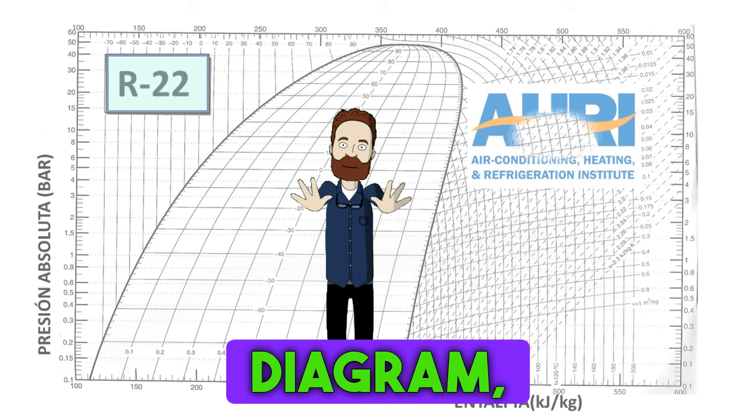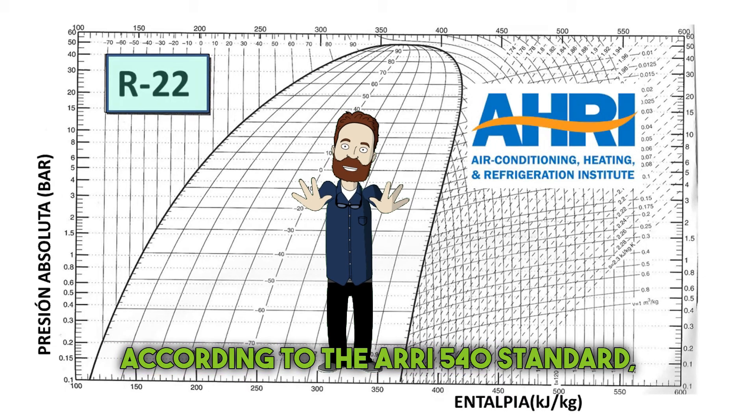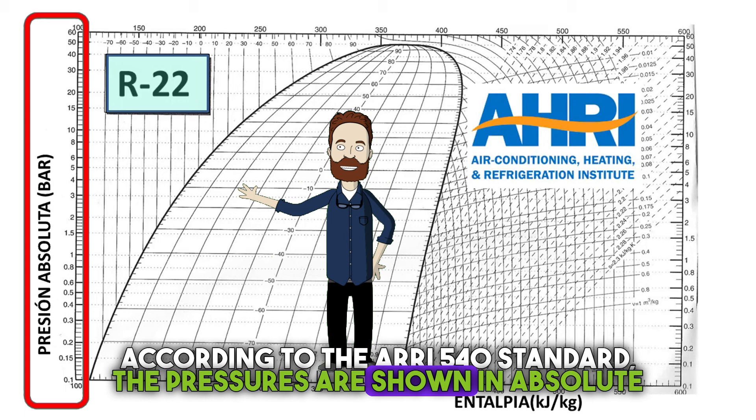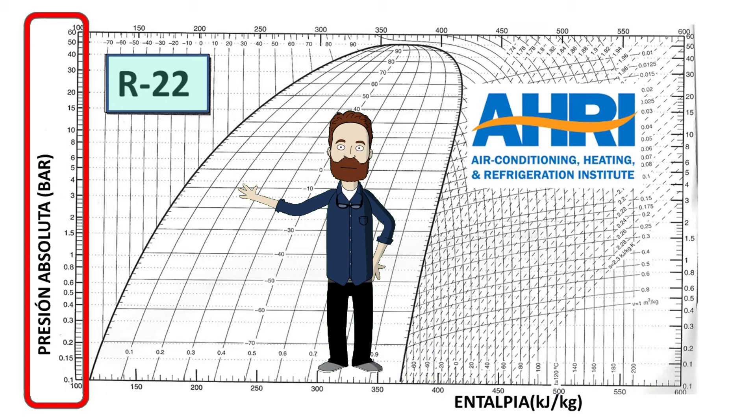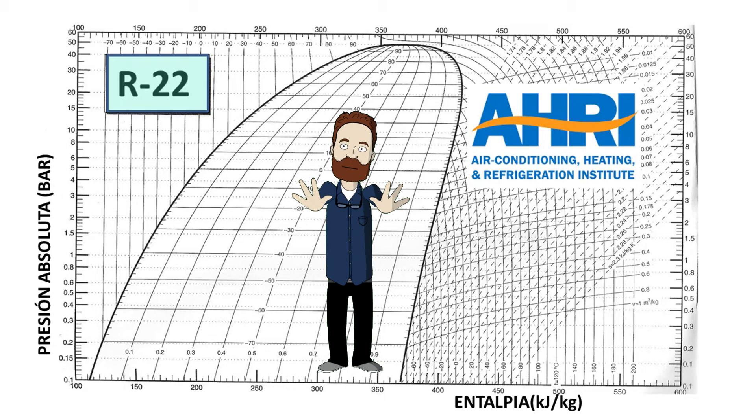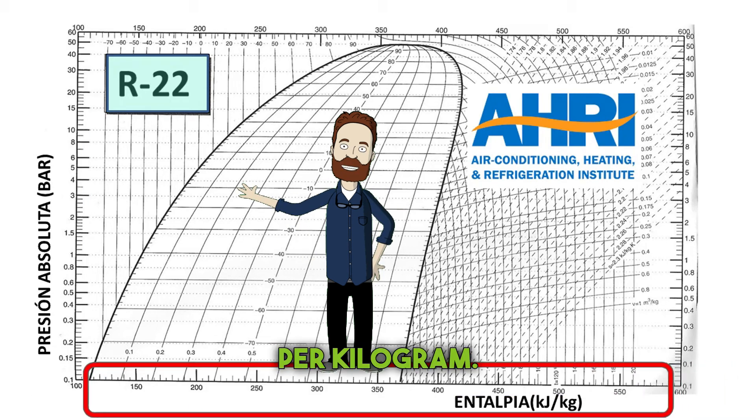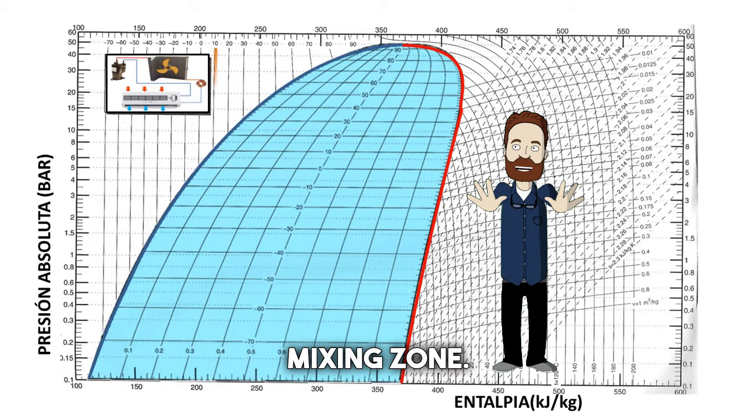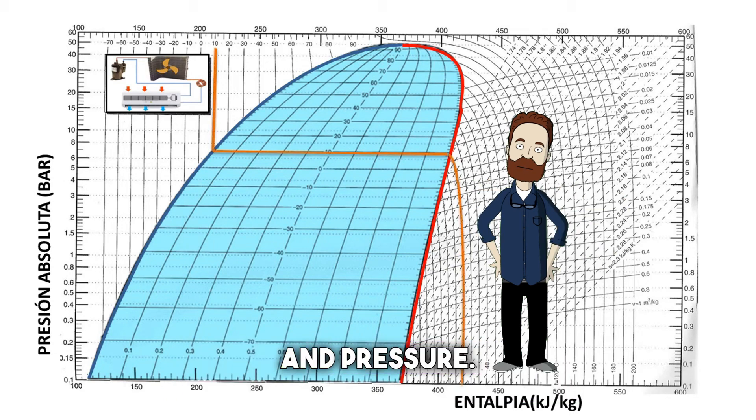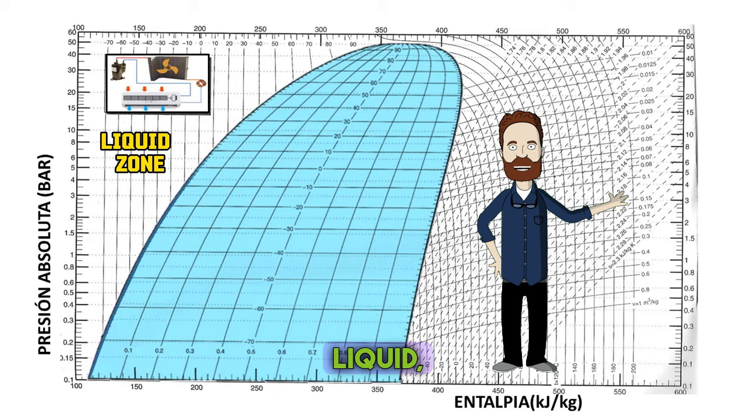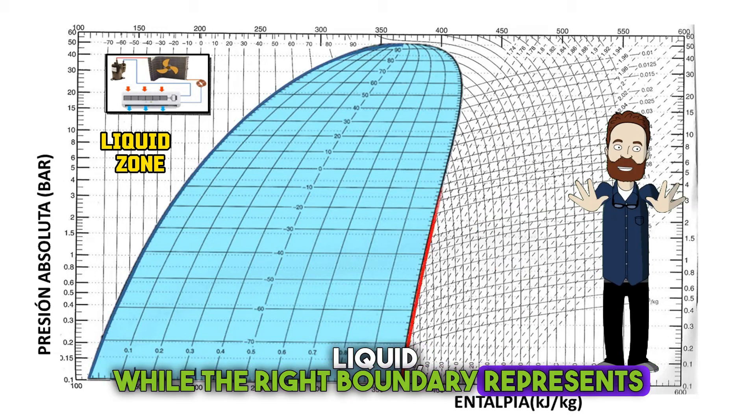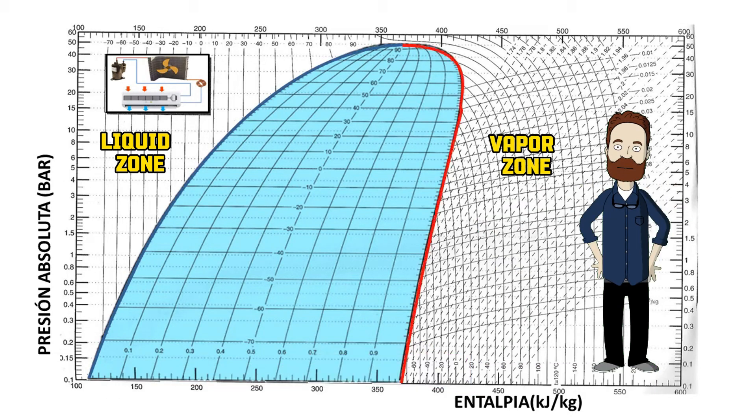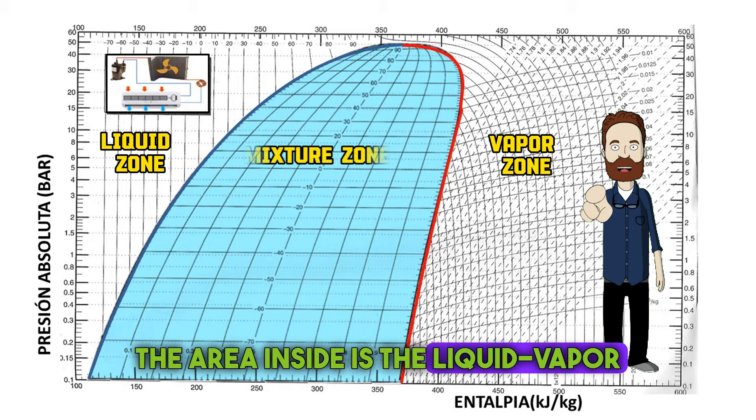In the Moliere diagram, according to the RE540 standard, the pressures are shown in absolute terms. You need to add 1 bar or 14.7 psi to the field gauge readings. The enthalpy is in kilojoules per kilogram. The dome-shaped area represents the mixing zone. A horizontal line within this zone indicates constant temperature and pressure. The left boundary represents pure liquid, while the right boundary represents pure vapor. The area inside is the liquid vapor mixing zone.